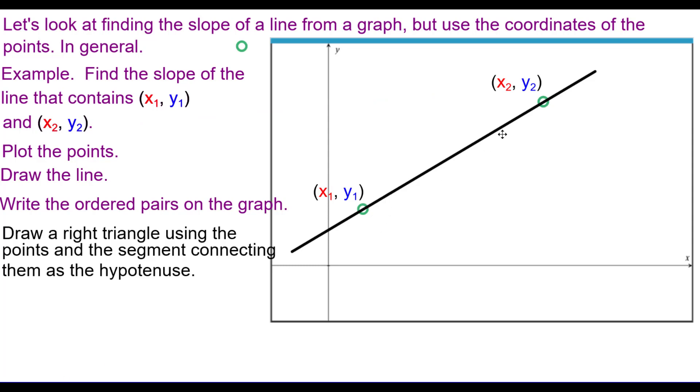And we drew a right triangle using these as endpoints of a segment that makes up the hypotenuse of the right triangle. Again, the vertical is a blue leg, the horizontal is a red leg.